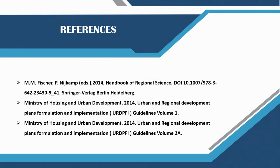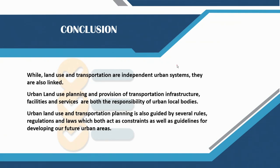Some of the references you can follow include the Urban and Regional Development Plans Formulation and Implementation guidelines, prepared by the Ministry of Housing and Urban Development for urban planning in Indian urban areas. To conclude this lecture: while land use and transportation are independent urban systems, they are linked and have to be considered together. Urban land use planning and provision of transportation infrastructure, facilities, and services are both the responsibility of local bodies — meaning local bodies should take up land use transportation plans. Urban land use and transportation planning is also guided by several rules, regulations, and laws which act as both constraints and guidelines for the development of future urban areas. Thank you.